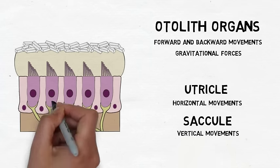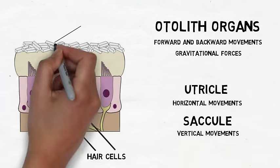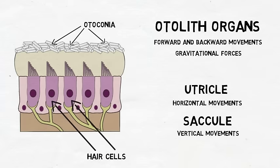Within the utricle and saccule, hair cells detect movement when crystals of calcium carbonate, called otoconia, shift in response to it, leading to movement in the layers below the otoconia and displacement of hair cells.